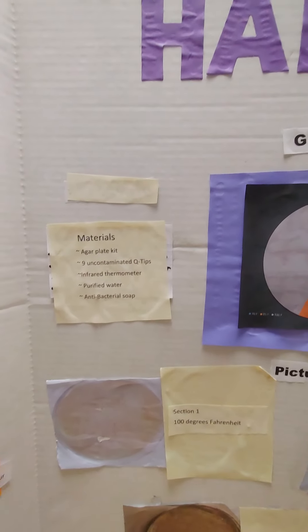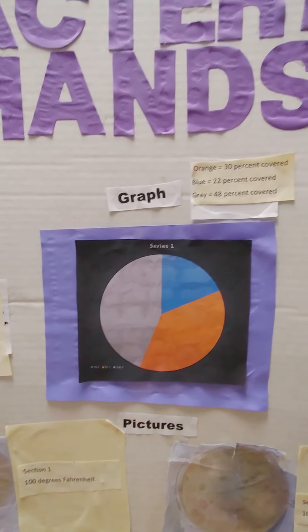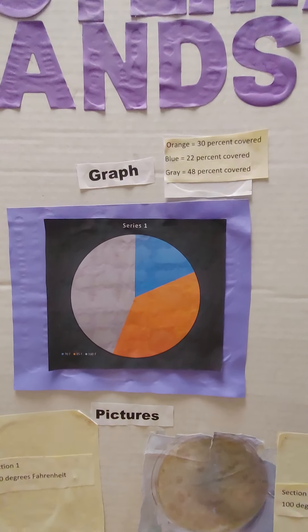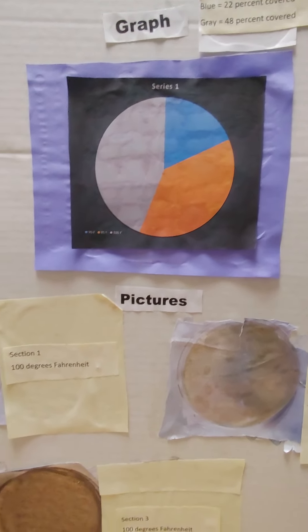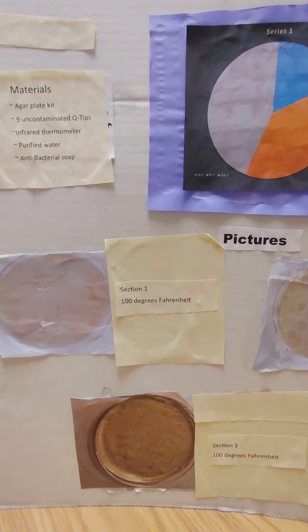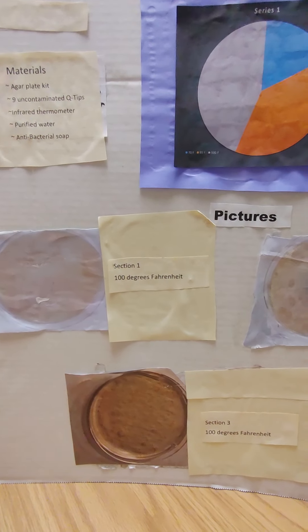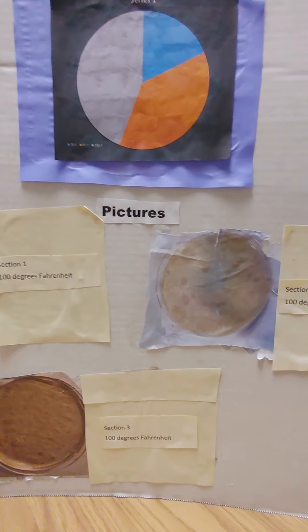The results were that 70 degrees Fahrenheit had the least bacteria on the agar plates, 100 degrees Fahrenheit had the most bacteria on the agar plates, and 85 degrees Fahrenheit was in between both of those temperatures.